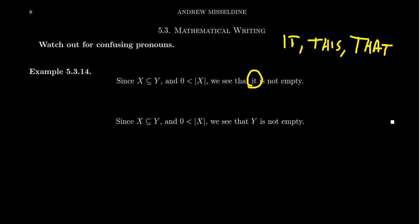And so in this sentence, it's like, what is it? What is not empty? Clearly, we're describing a set. A set is not empty, but which set? X is not empty because its cardinality is not zero, but it's also true that Y is not empty because it contains a non-empty subset. So honestly, the statement that it is not empty could apply to both sets, X and Y.